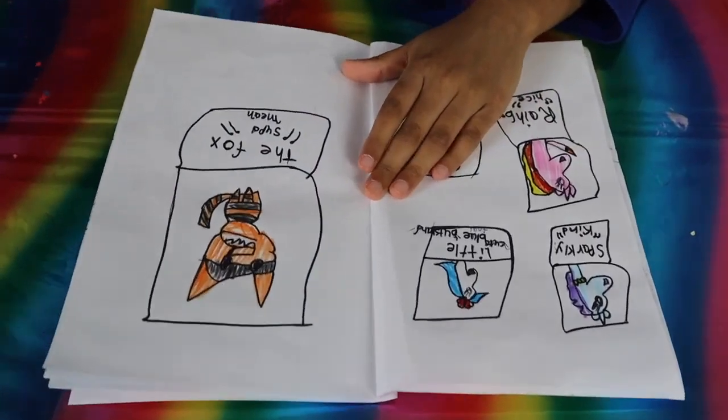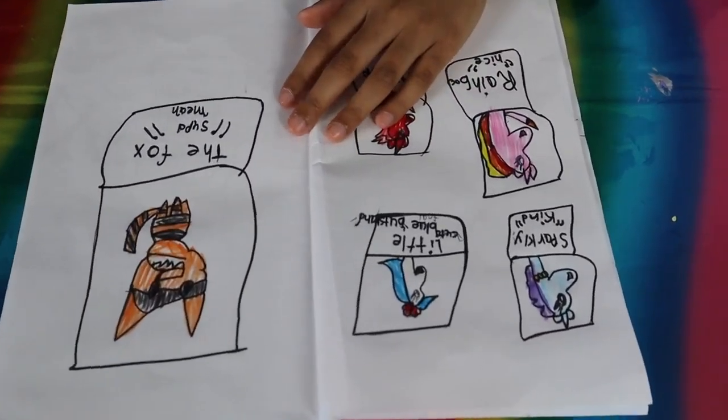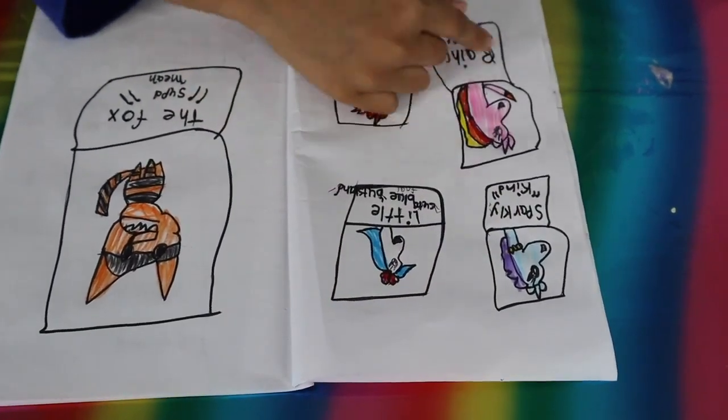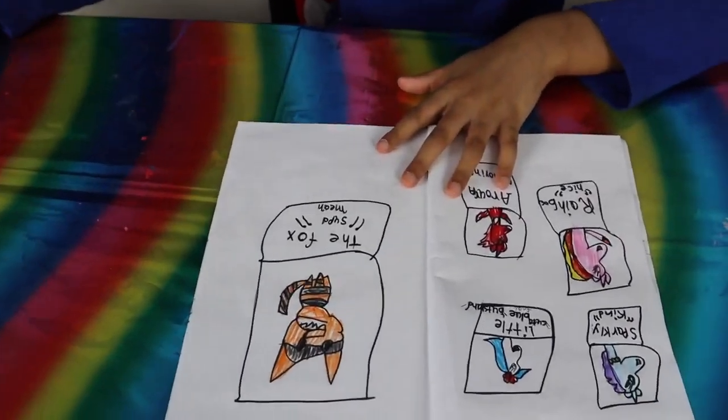So, here is all the characters. Here is Sparkly. This is our main character. She is kind. Here is the rainbow, our last character in our last book. She is nice.